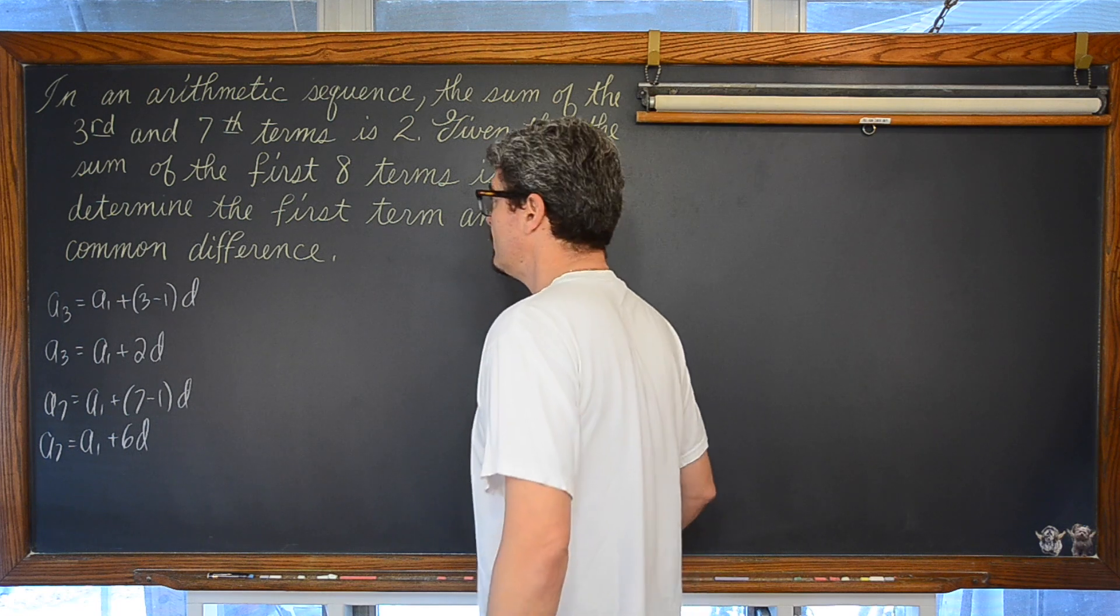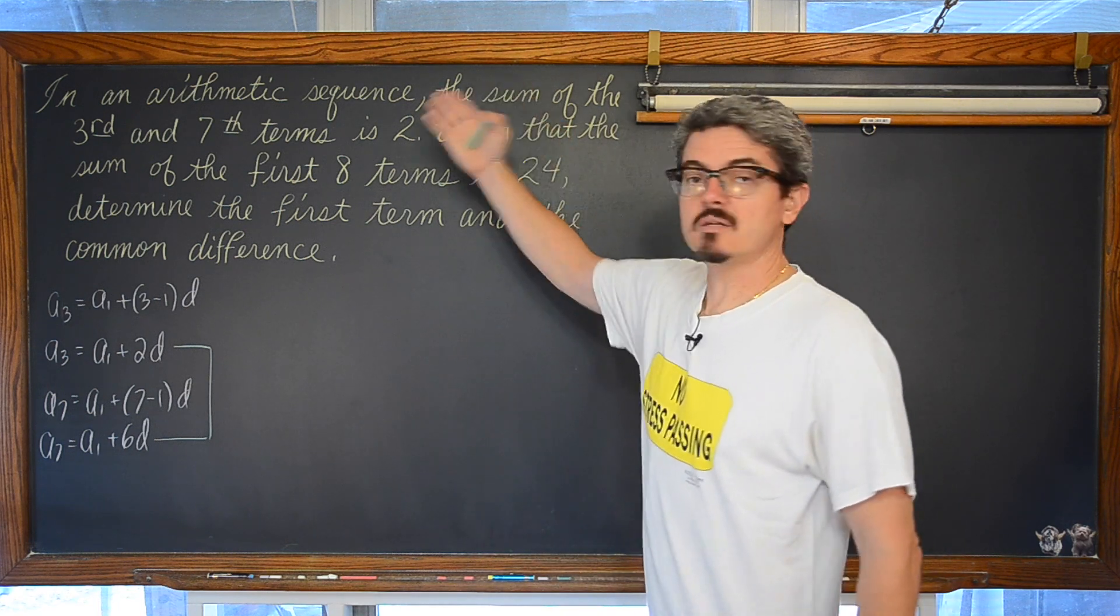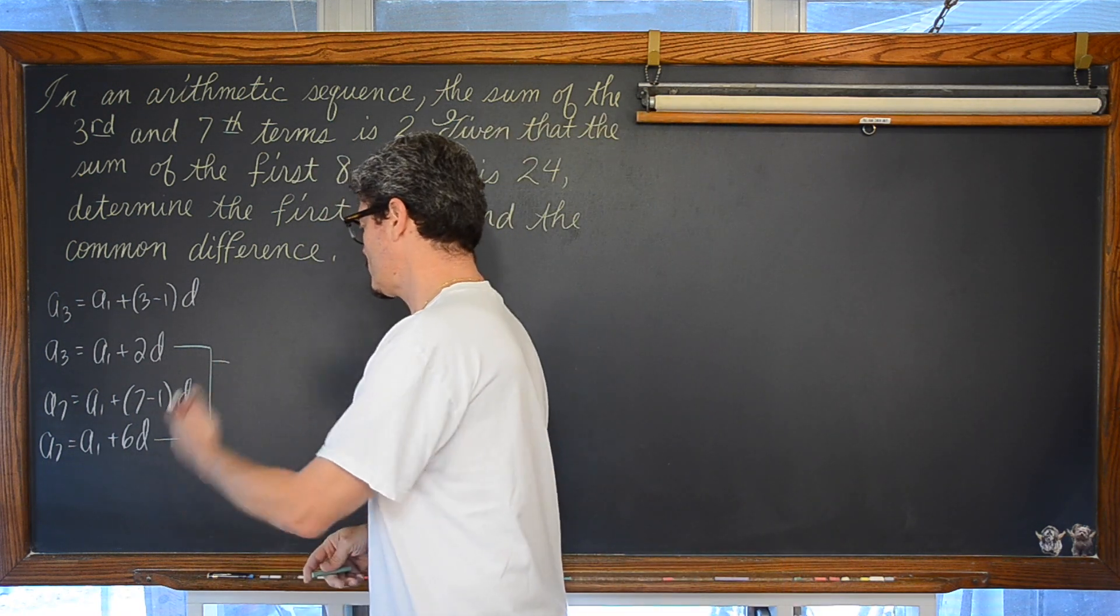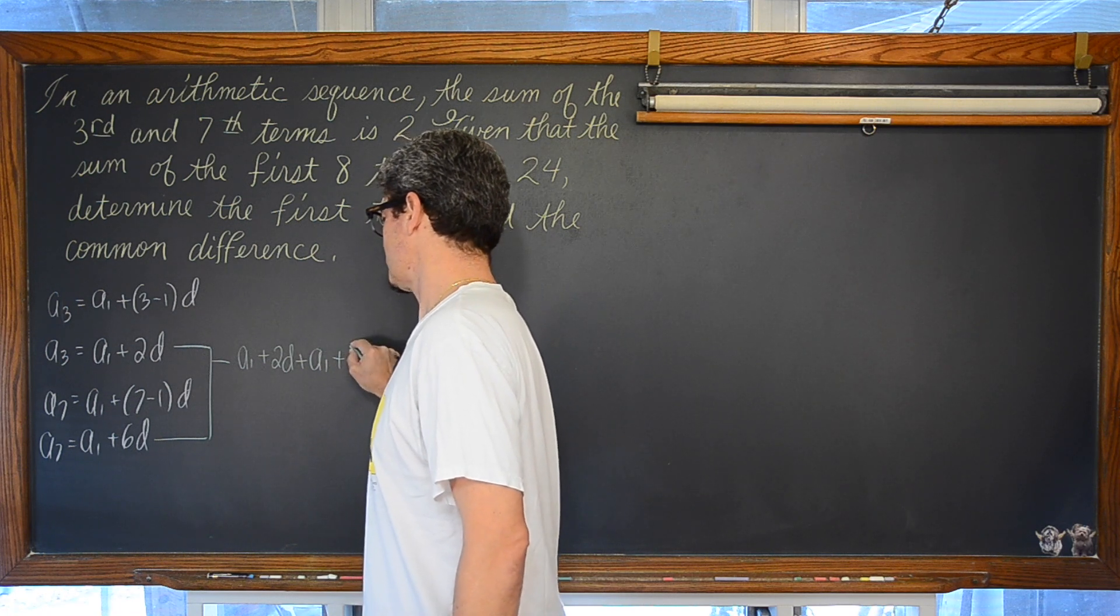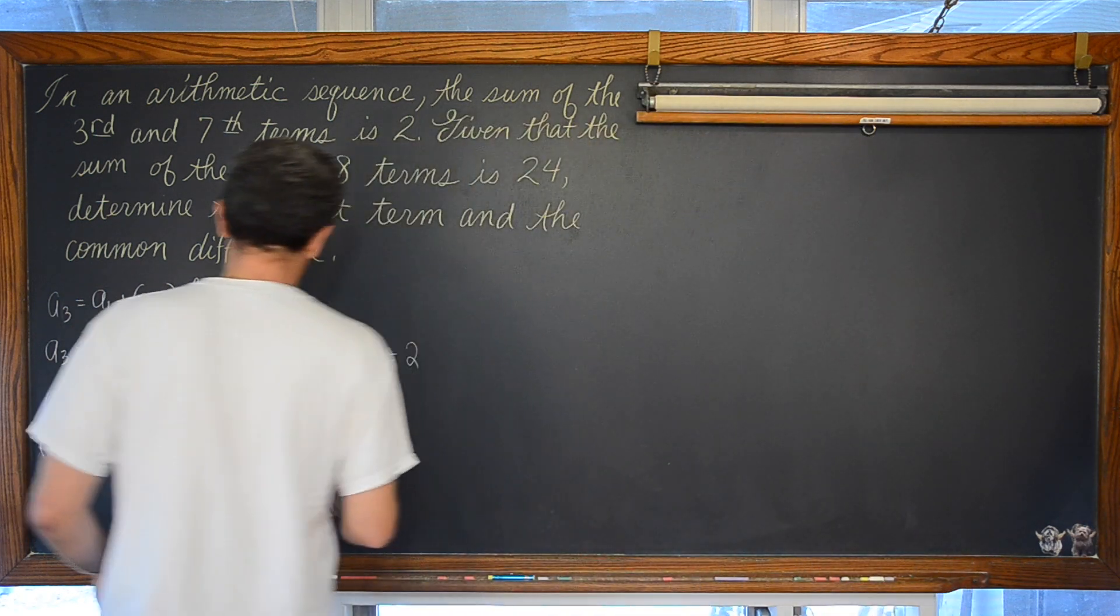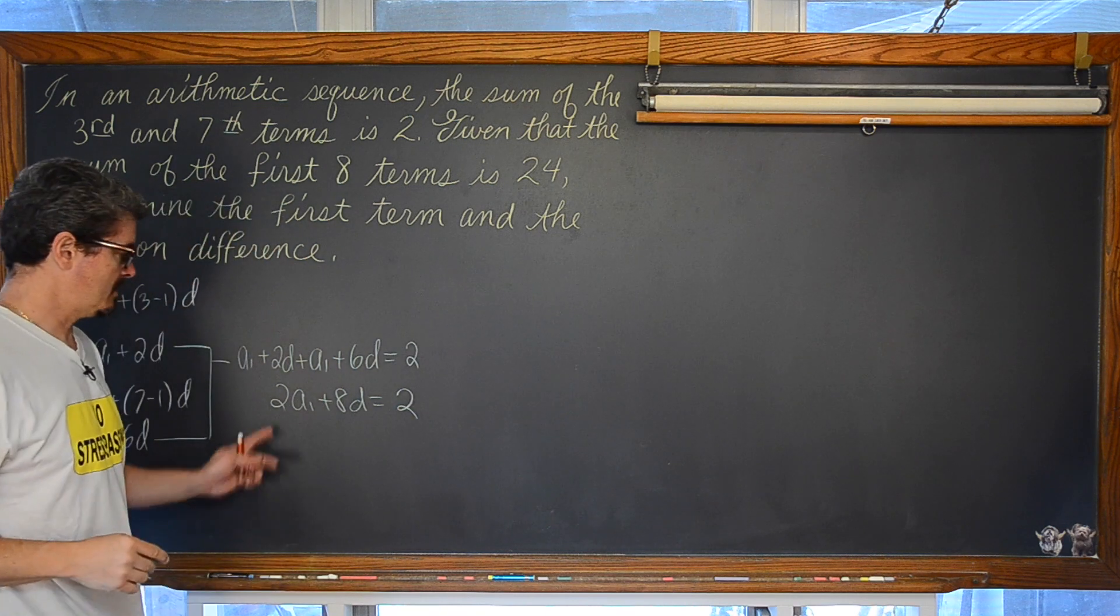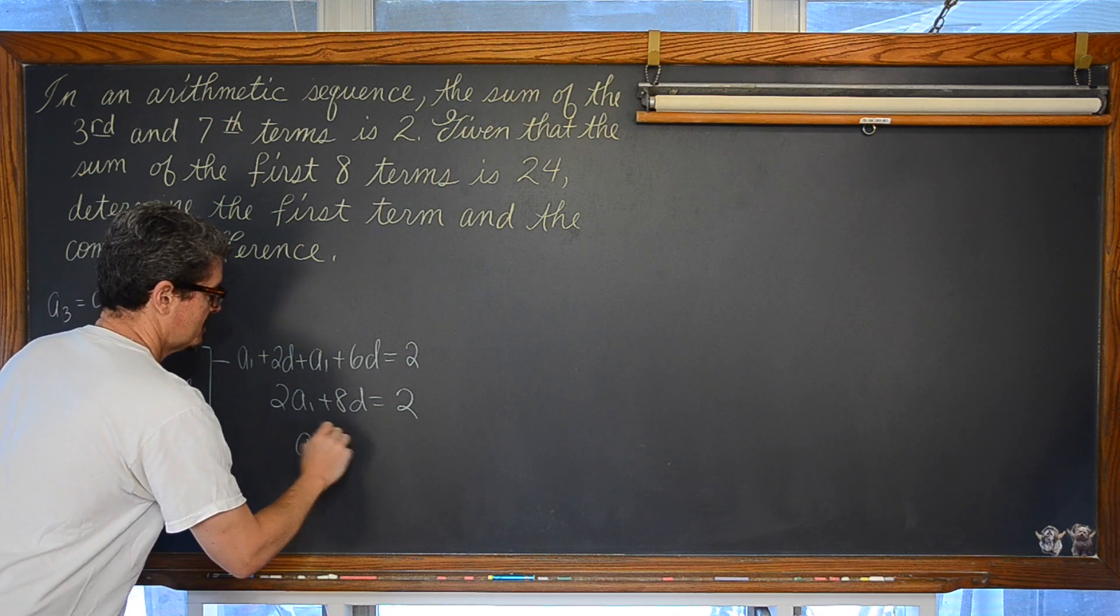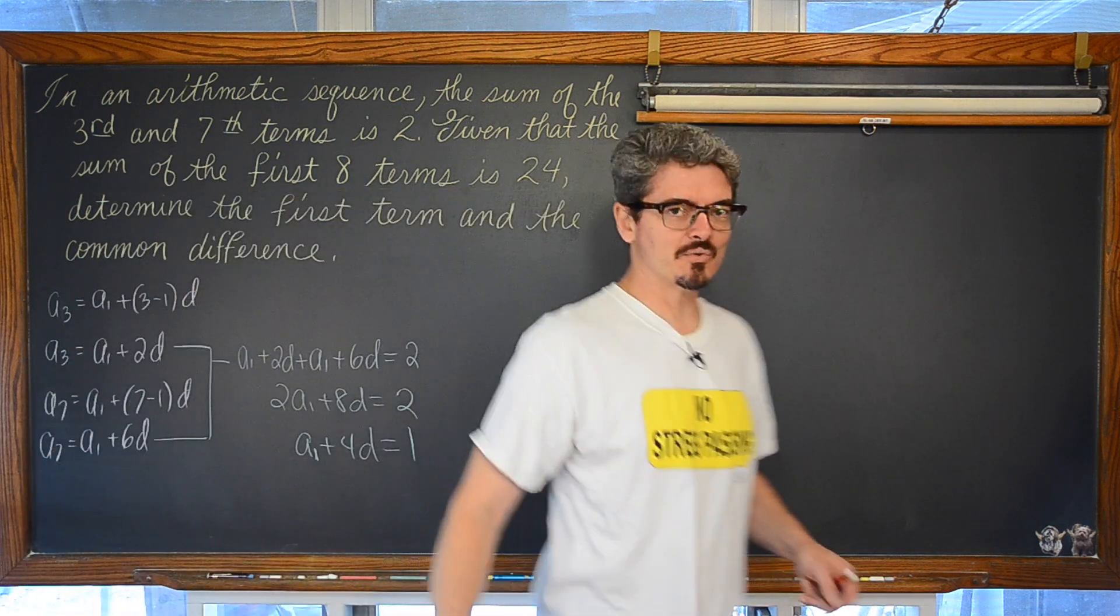When you take these two terms, a sub 3 and a sub 7 and add them, it needs to be 2. We don't really know what the third and seventh term or number in the arithmetic sequence is, but when we add them, a sub 1 plus 2d plus a sub 1 plus 6d, that needs to come out to be 2. Combining like terms, we have 2 times a sub 1 plus 8d is equal to 2. Divide everything by 2 correctly. And we have a sub 1 plus 4d equals 1.